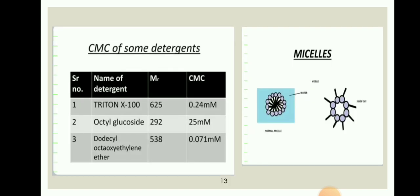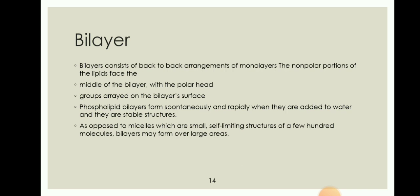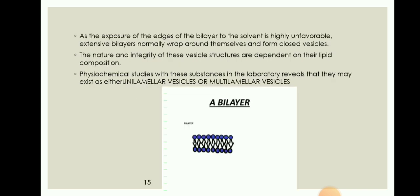Below the CMC, individual lipid molecules predominate. A bilayer consists of a back-to-back arrangement of monolayers. The non-polar portions of the lipids face the middle of the bilayer, with the polar head groups arrayed on the bilayer surface. Phospholipid bilayers form spontaneously and rapidly when added to water and are stable structures. As opposed to micelles, which are small, self-limiting structures of a few hundred molecules, bilayers may form over large areas. As exposure of the edges of the bilayer to the solvent is highly unfavorable, extensive bilayers normally wrap around themselves and form closed vesicles. The nature and integrity of these vesicle structures are dependent on their lipid composition. Physicochemical studies reveal that they may exist as either unilamellar vesicles or multilamellar vesicles.